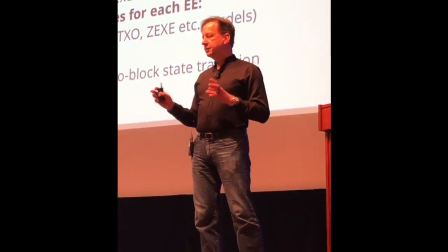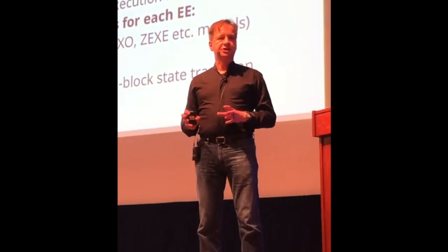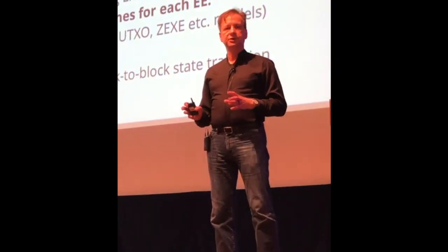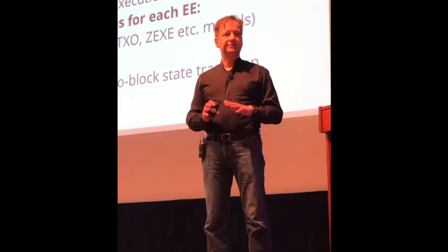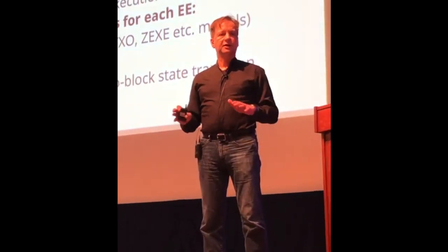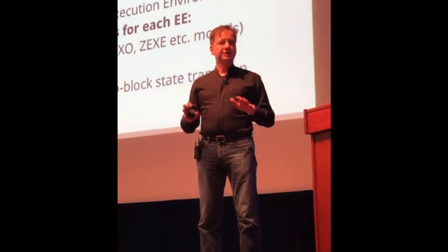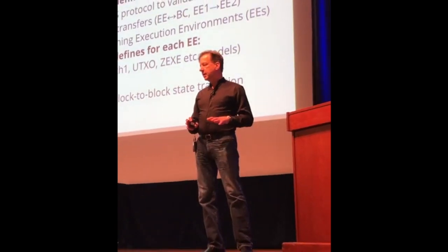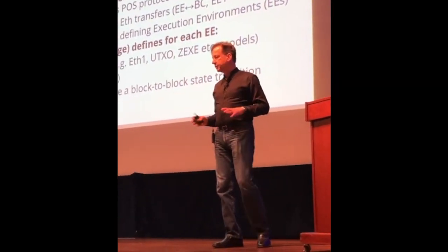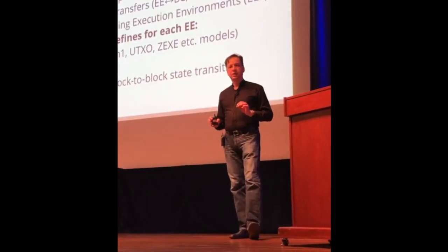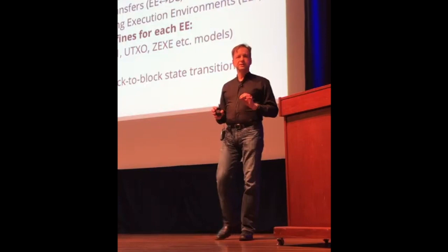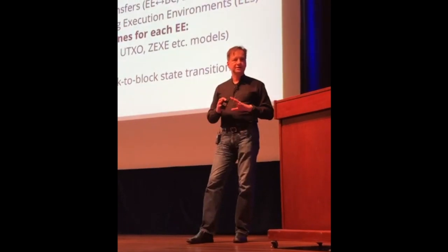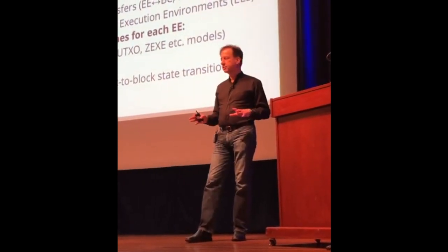The EE layer, if you can believe it, actually defines what is a transaction. Ethereum 2 does not define what a transaction is. In fact, in Ethereum 2, a UTXO-style Bitcoin transaction can be a completely valid transaction - you just have to define an execution environment that can do it. You can define a Zcash environment that operates at an Ethereum 1 type level. You can define an identity layer. The EE flexible layer also defines what is state. It is possible in Ethereum 2 to have execution environments where there's no state period, which is extremely different from Ethereum 1 where it was all very prescriptive.